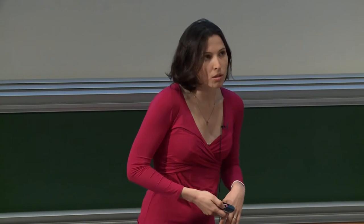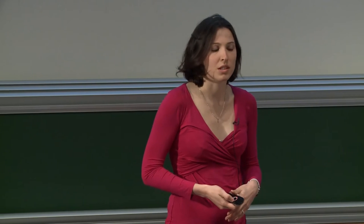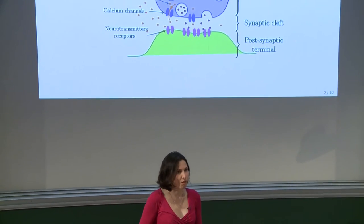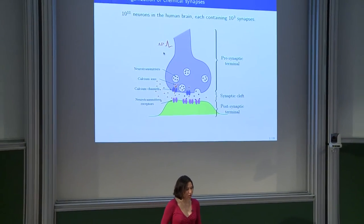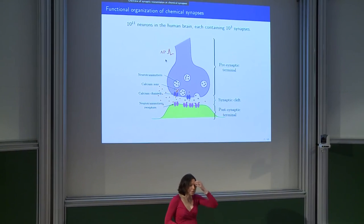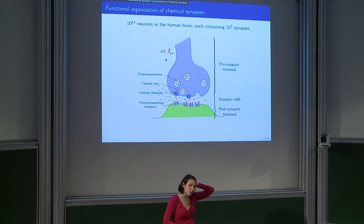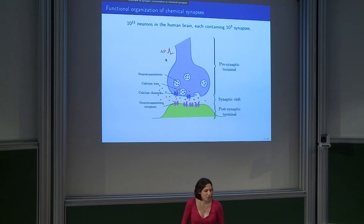The synapse is a structure that permits transmitting an electrical signal from one neuron, the presynaptic neuron, to another, the postsynaptic. When an electrical signal arrives, an action potential shown in red here, it triggers the opening of the voltage-gated calcium channels, which are the blue channels in this picture.